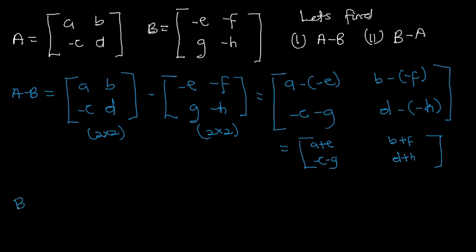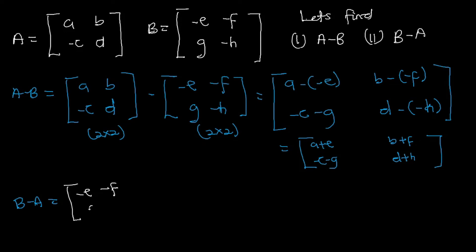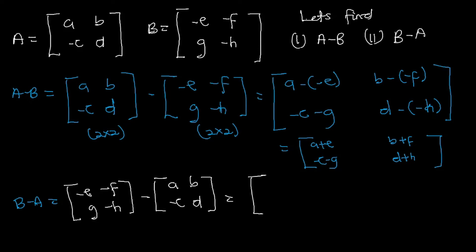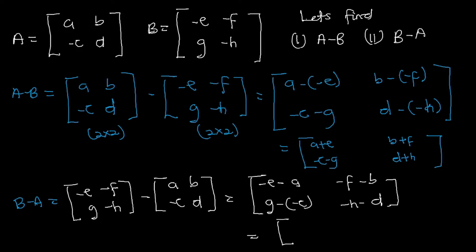For B minus A: we write matrix B first — −e, −f, g, −h — minus matrix A which is a, b, −c, d. This gives: (−e − a), (−f − b), (g − (−c)) = g+c, and (−h − d). Simplifying: B minus A equals −e−a, −f−b, g+c, −h−d.